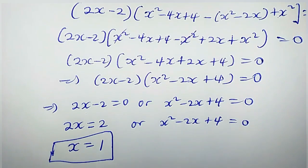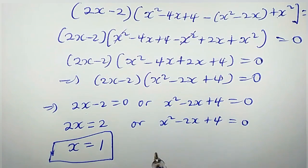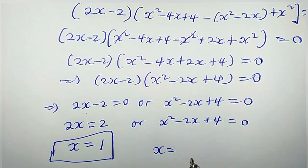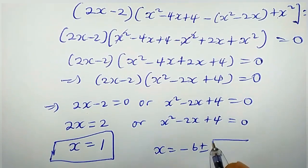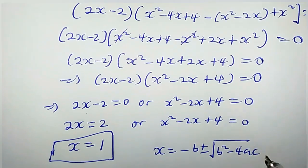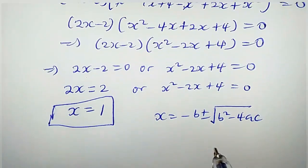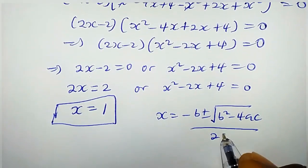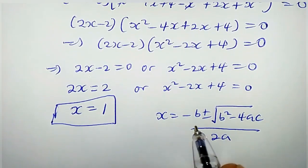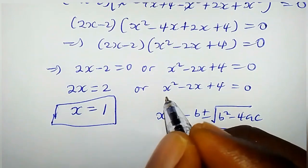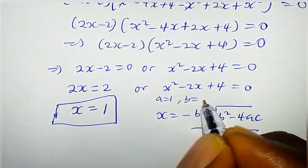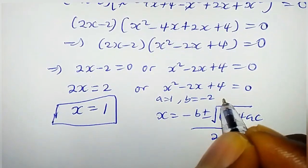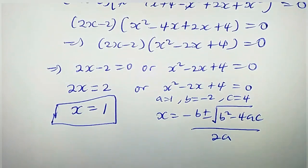Recall that x equals negative b plus or minus the square root of b squared minus 4ac, all over 2a. This is the quadratic formula. For our equation x squared minus 2x plus 4 equals zero, our a is 1, b is negative 2, and c is 4.